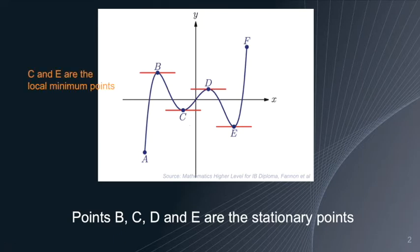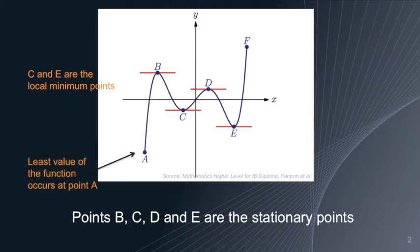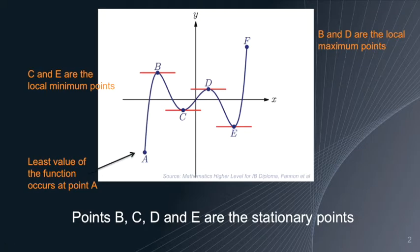Points C and E are the local minimum points. If you look at the domain of this graph from A to F, you may notice that at point A the least value of the function occurs. On the other hand, stationary points B and D are the local maximum points, but at point F the largest value of the function can occur.